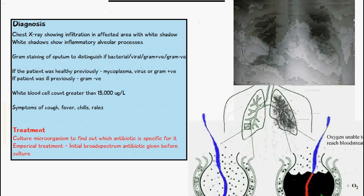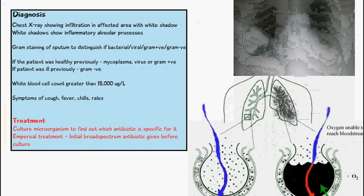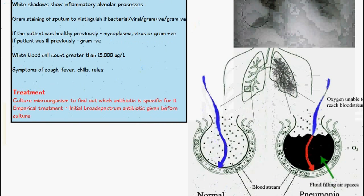When looking at the treatment of pneumonia, we first culture the microorganism to find out which antibiotic is specific for it. We also do empirical treatment before we culture — using a broad spectrum antibiotic in the time it takes to culture the microorganism. Once we've found out specifically what is causing the infection, we can then use very specific antibiotics.